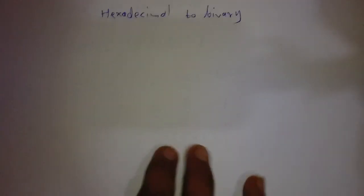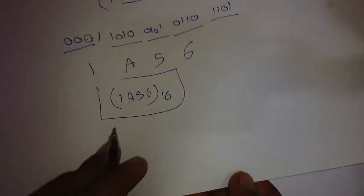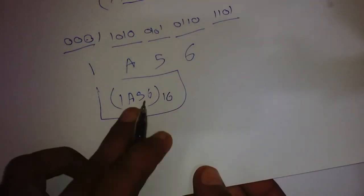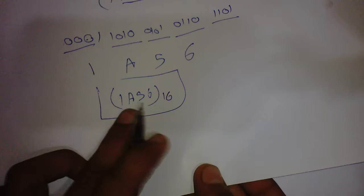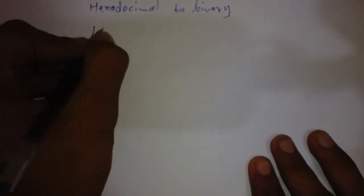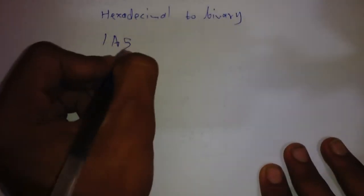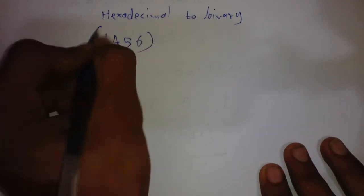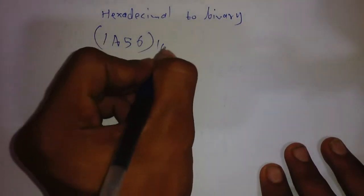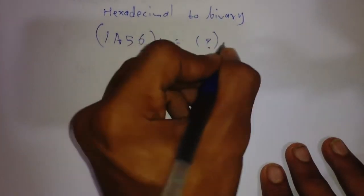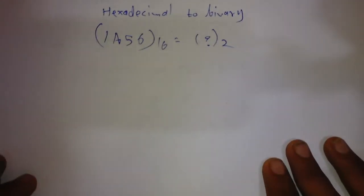Let's learn how to convert a hexadecimal number to a binary number. We will take the hexadecimal number from the previous example, that is 1 1 A 5 6.